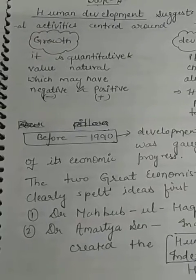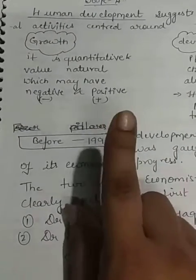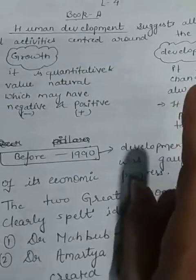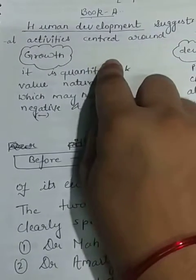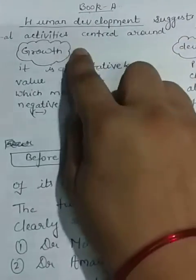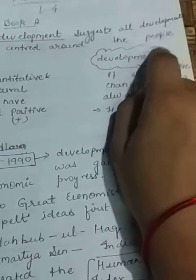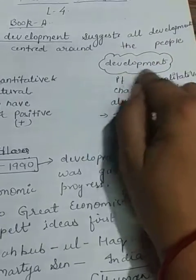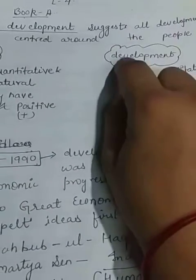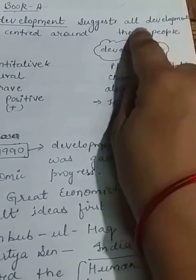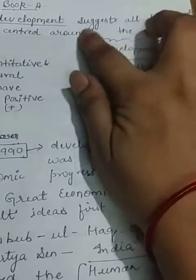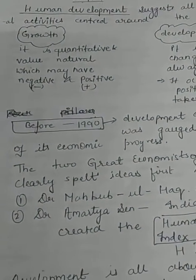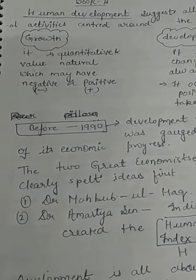In the human development topic, human development suggests all developmental activities centered around the people. Human development is not related to only the development of the country; it is related to the development of the people. In the Human Development Index, the important thing is people-centered development — meaning people are at the center, and development is built around the people.